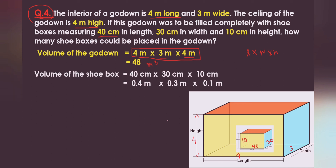Next, we calculate the volume of the shoe boxes. We convert the dimensions to meters: 40 cm ÷ 100 = 0.4 m, 30 cm ÷ 100 = 0.3 m, and 10 cm ÷ 100 = 0.1 m. Multiplying: 0.4 × 0.3 × 0.1 = 0.012 cubic meters.